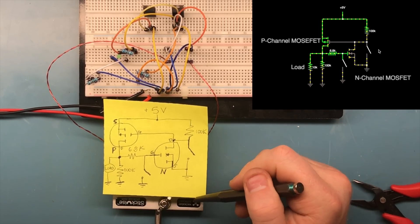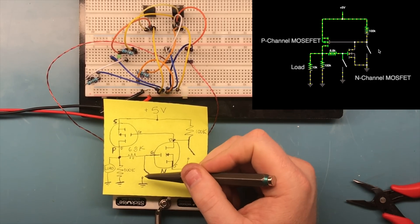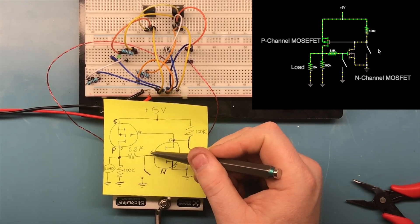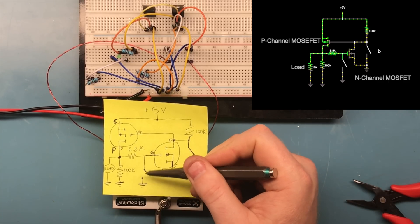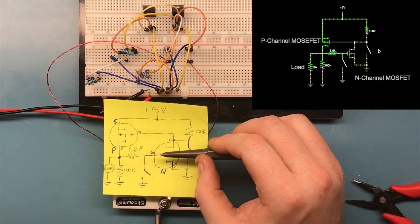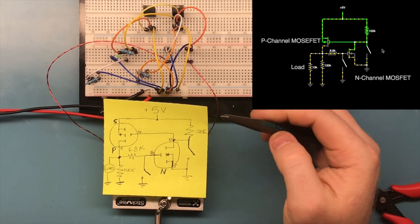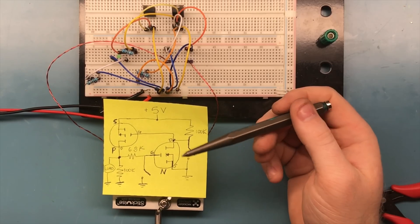When we introduce a magnet to this reed switch, we drop the gate of that n-channel to ground and turn that n-channel off. Once that turns off, the p-channel is back to being off and there's no current flowing.